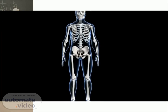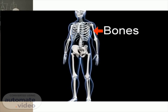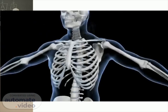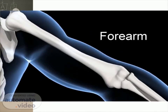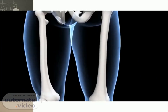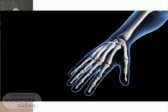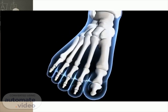Our skeleton system is made of bones and it gives a shape to our body. There are various types of bones in our body. Some are long, like the bones in the forearms and thighs. Some are short, like the bones in the wrist, foot, and ears.